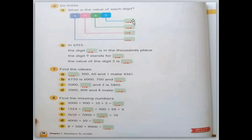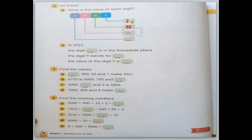This 2 is on the ones — the ones place is not followed by zero, so you just write down the number itself: 2. This 6 is on the tens — tens is followed by one zero, so you have 6 and one zero: 60. The 9 is on the hundreds place — hundreds is followed by two zeros: 900. And this 5 is on the thousands place — write down 5 followed by three zeros: 5,000.